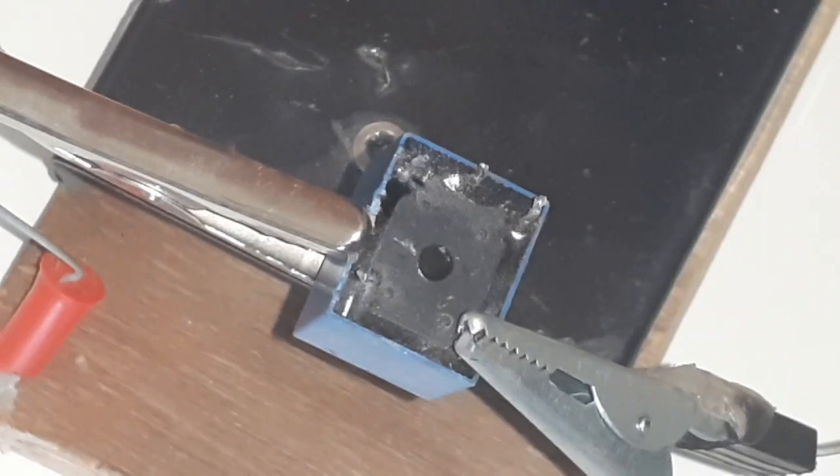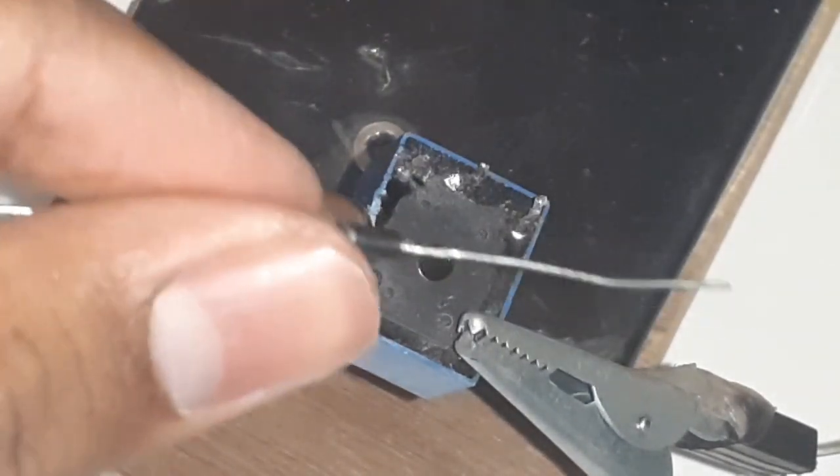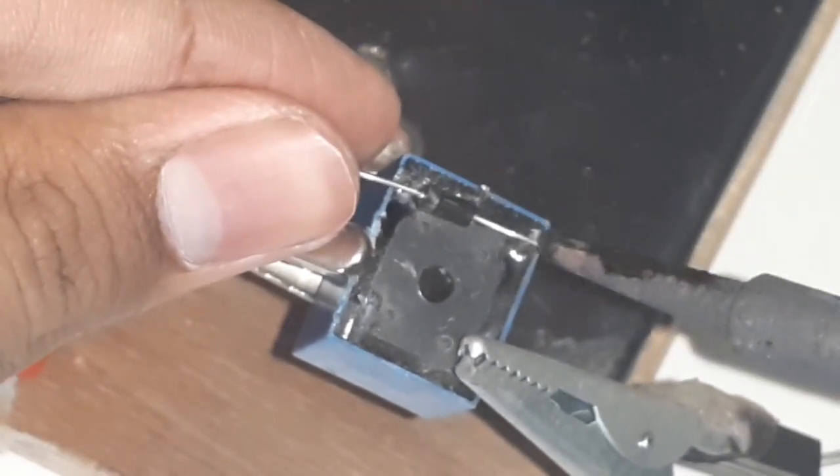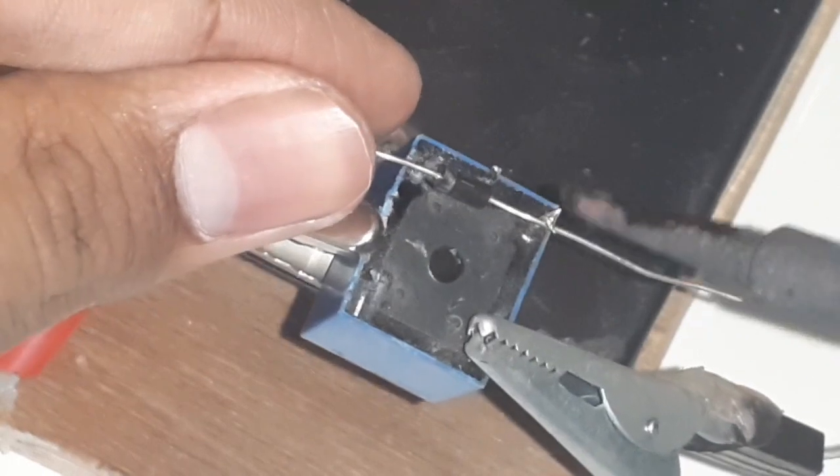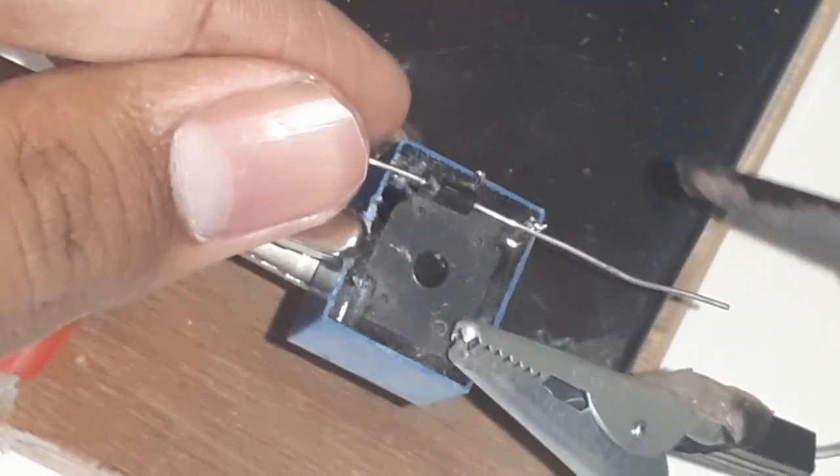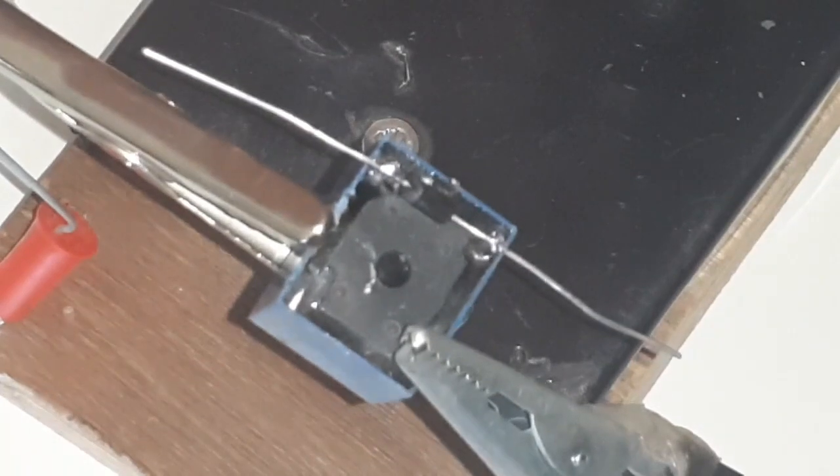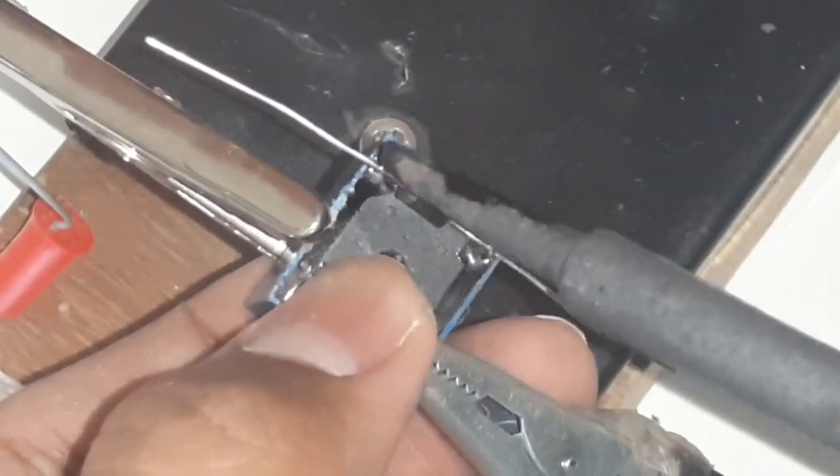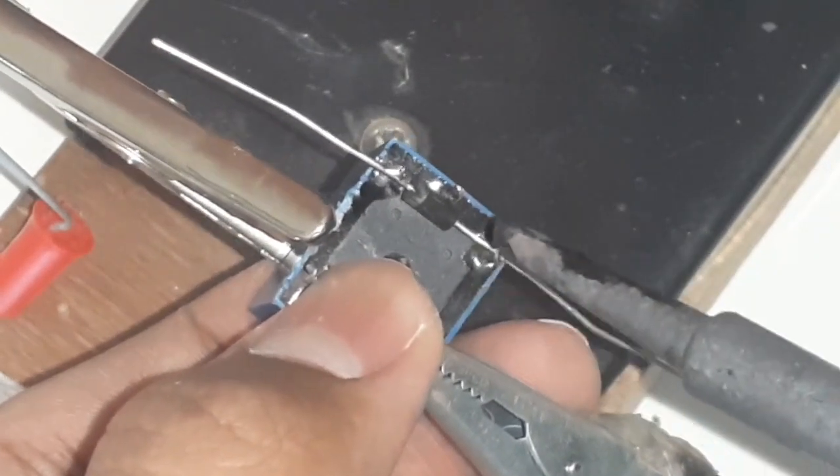First we have to take the relay, and then we have to take the diode. I will be soldering the diode onto the pins of the relay as shown here. As you can see, the diode has been connected to the first and the third pin of the relay.